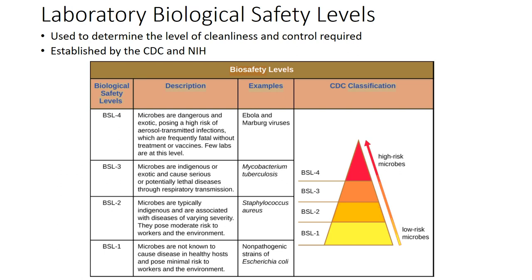When we move into level three and four, that's when we get to diseases that are much more severe and much more likely to cause disease. These can be lethal or fatal diseases. One of the main differences between level three and level four is that level four a lot of times has aerosol-transmitted infections — diseases that really don't have cures and can be spread simply by breathing. When you get to safety level four, HEPA filters, which we'll talk about in this chapter, are required to even filter the air.